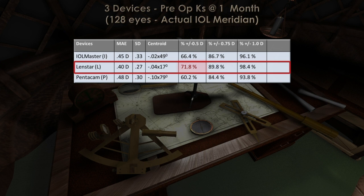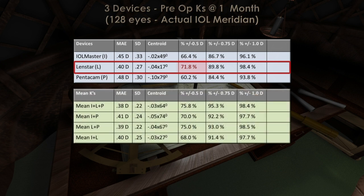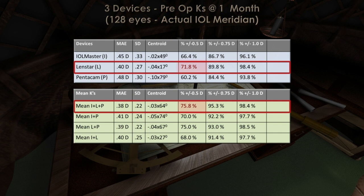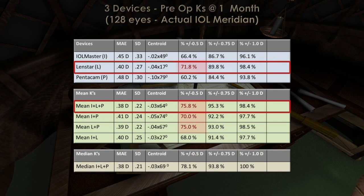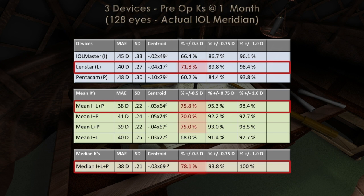The error in predicted residual astigmatism was then calculated using the mean Ks derived from individual devices in different combinations as well as all three devices. The percentage of cases within a half-diopter was highest utilizing the mean Ks from all three devices, and adding the Anterior Scheinfluge Ks to either the LenStar or IOL-Master Ks improved the prediction accuracy of each individual biometer. Finally, the error in predicted residual astigmatism was calculated using the median K derived by combining the keratometry measurements from all three devices. The integrated median K was more accurate than the prediction utilizing Ks from individual devices, and the differences were statistically significant. In addition, the median K calculation proved to be more accurate than the mean K calculation of two or more devices used in this study.